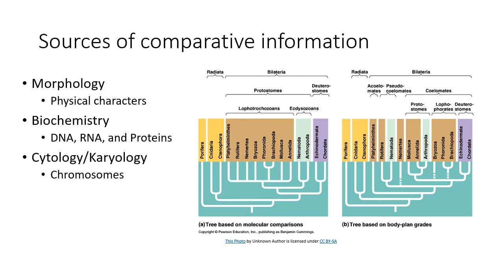Originally, the only information available to build phylogenies was the physical morphology of organisms, leading to groupings based on body plan grades. When we add biochemistry and cytology — looking at chromosomes, DNA, RNA, and proteins — we get a different picture of evolutionary relationships. The tree based on molecular comparisons is considered more accurate, though it contains a large polytomy, meaning those relationships are still being worked out.